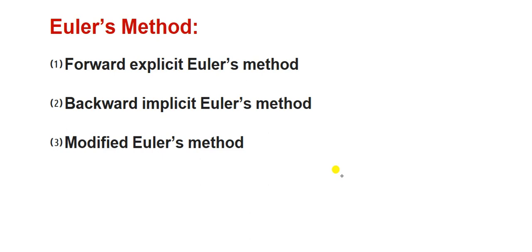Hello everyone, today I am going to explain Euler's method. Euler's method is a multi-step method and we categorize Euler's method in three forms. The first form is known as the forward explicit Euler's method, the second is the backward implicit Euler's method, and the third one is the modified Euler's method. In this video, I am going to explain the forward explicit Euler's method.